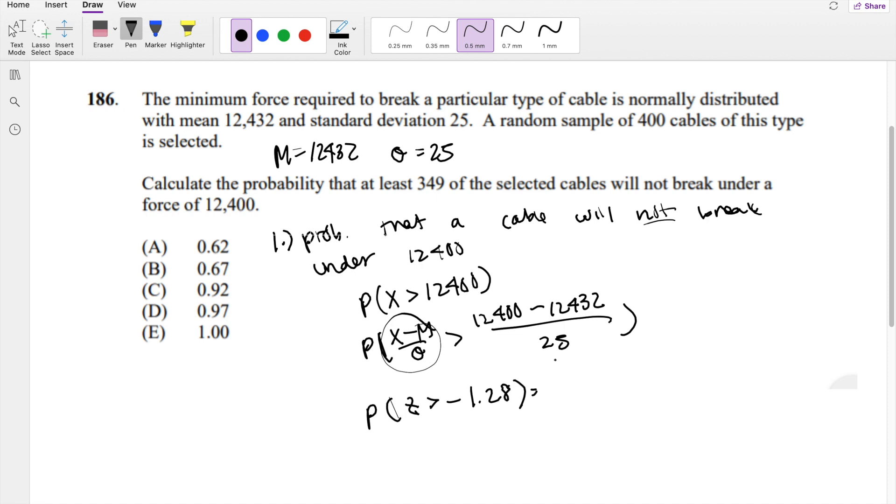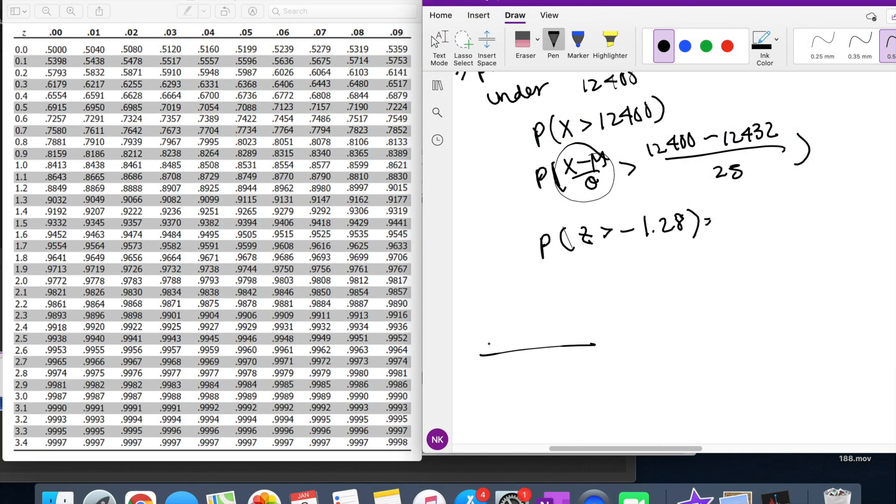So the probability that the cable would not break under the pressure is... Let me get my z table. We're looking for the probability that z is greater than negative 1.28. Because on the exam they give you a positive table, we look at 1.28 and the CDF. The CDF and the probability we're looking for is exactly the same, so we can just use it directly. 1.28 is approximately 0.9, like approximately 90%.